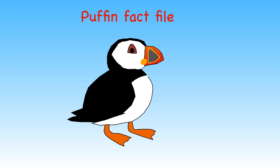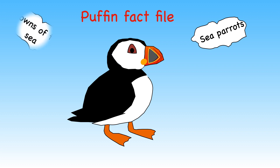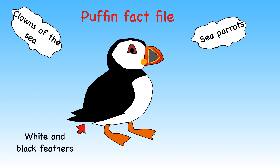Let's return to my two favourite birds and look in more detail at puffins. Puffins are often named sea parrots, or sometimes clowns of the sea. Atlantic puffins have white and black feathers and a large parrot-like beak. Their beak changes colour during winter — it loses its bright orange colour and becomes a dull grey.